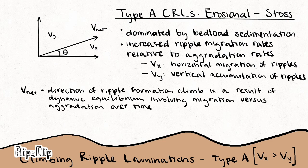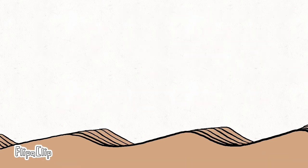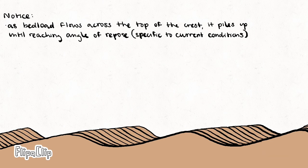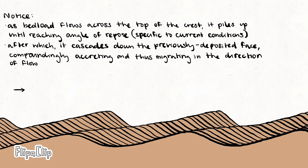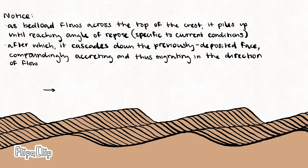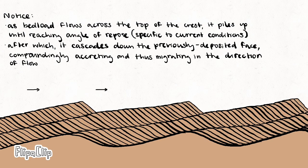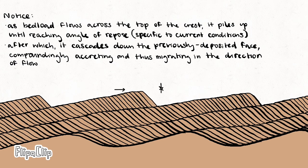During ripple formation and propagation, these factors compete to produce an angle of climb, theta, specific to the conditions of the system at that moment in time. You can see here that as the transported bedload crests each successive accreted ripple, it cascades down the leeward face at the angle of repose, producing the vectorized direction of climb.